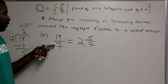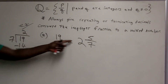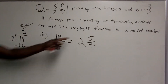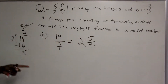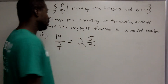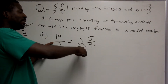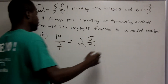We determine how many times the denominator goes into the numerator — that becomes the whole number for the mixed number. The remainder becomes the new numerator, and the original divisor still remains the denominator. So 19 over 7 as an improper fraction equals 2 and 5 sevenths as a mixed number — they represent the exact same quantity.